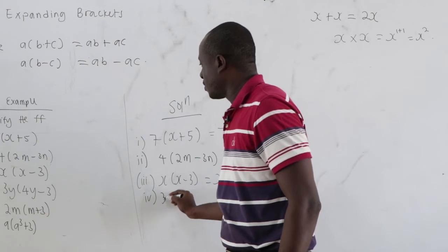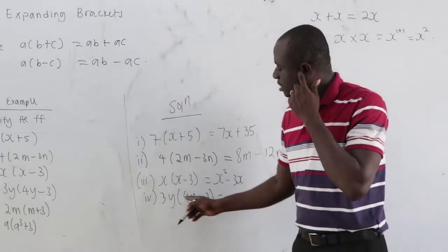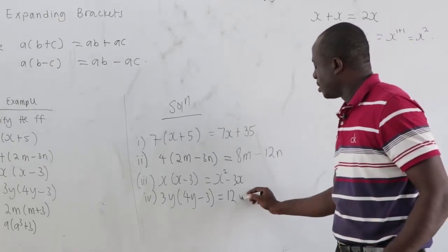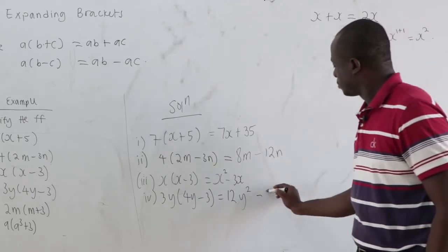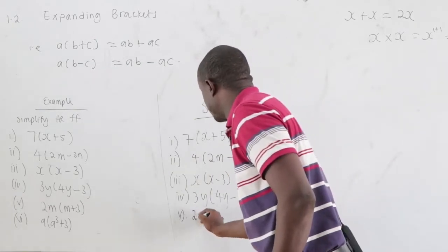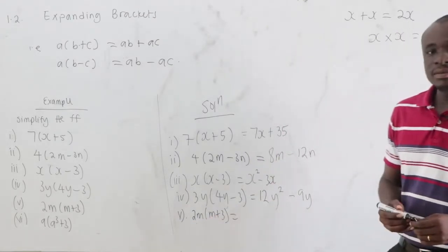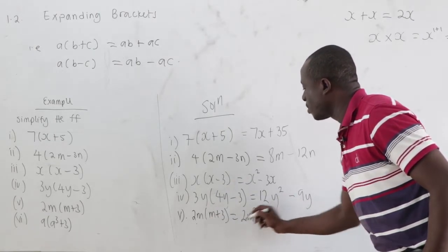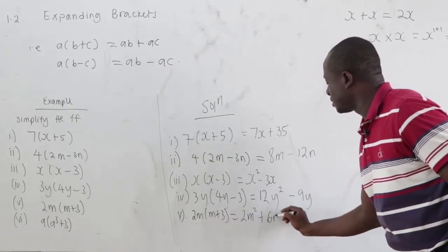Fourth: 3y times 4y minus 3. We get 3 times 4 equals 12, and y times y equals y squared, so 12y squared. Then 3y times negative 3 equals negative 9y. Fifth: 2m times m plus 3. We get 2m times m equals 2m squared, and 2m times 3 equals 6m.